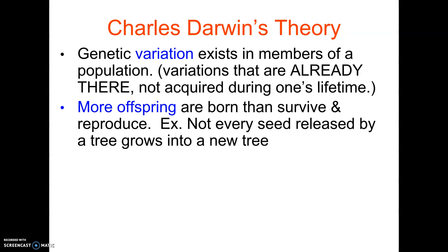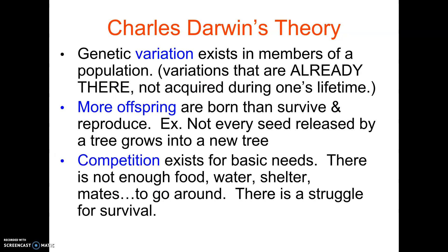The second thing he said is that more organisms are born than are going to actually survive to adulthood and reproduce. Mice have like 16 to 18 babies at a time — if every single one survived, there'd be no room for anything else on the planet except mice. Not every seed released by a tree grows into a new tree; only some land in places good for growth and have the characteristics to survive. In addition to that, there's competition for basic needs — not enough food, water, shelter, or mates to go around for everybody. There's a struggle for survival.